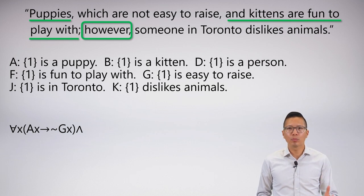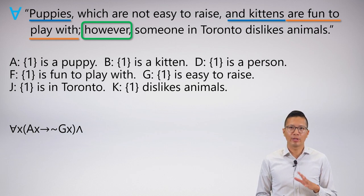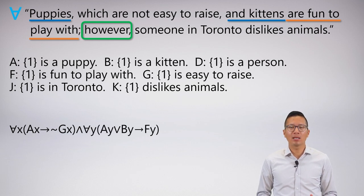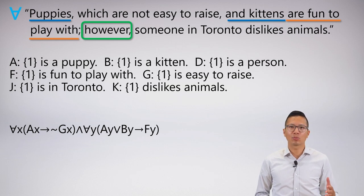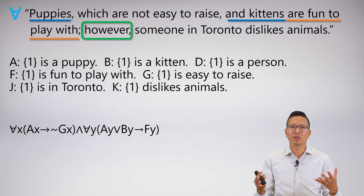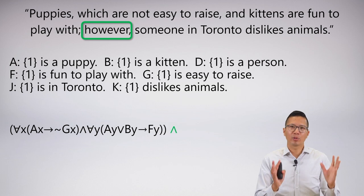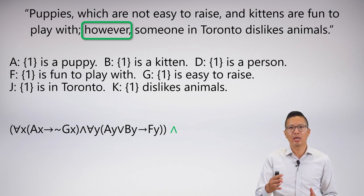I'm going to symbolize everything up to 'however' since that's a main break term. So I symbolize 'puppies and kittens are fun to play with.' The group is puppies and kittens, and the property is fun to play with. This is a universal — but be careful, this is the cat-dog example. I don't mean something that's a puppy and a kitten at the same time; I mean something that's a puppy or a kitten, then it has the property of being fun to play with, so I use a disjunction in the group: for all Y, if PY or KY, then FY. Notice I used the variable letter Y here — even though I used X already, because I closed that scope, X is available again, but using Y is fine.